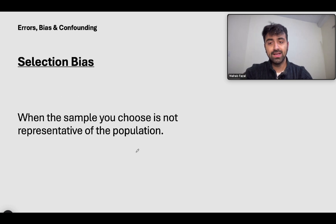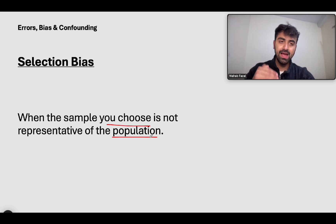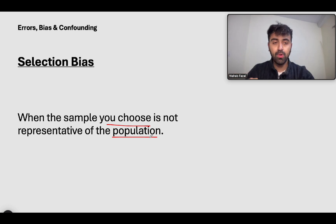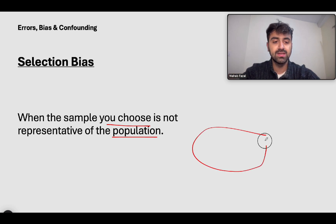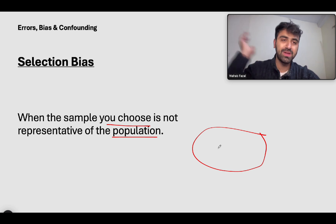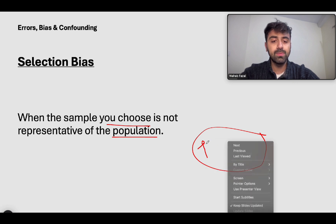What is selection bias? Selection bias is when the sample you choose is not representative of the population. Whenever you want to conduct a study — let's say you want to conduct a study in the Asian population — that's your population. You can't take all of the people of Asia and do a study on them. So what you do is you try to take a very small subgroup, but you try to make sure that this subgroup has people from all the different parts of Asia.